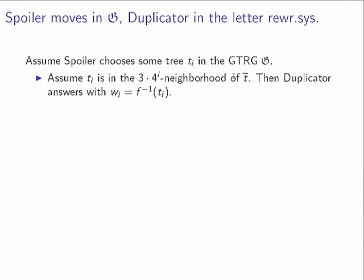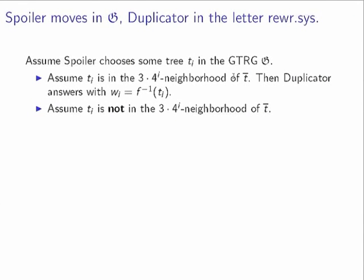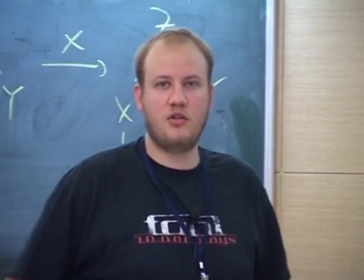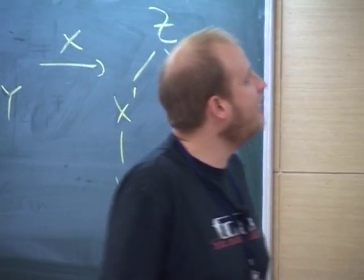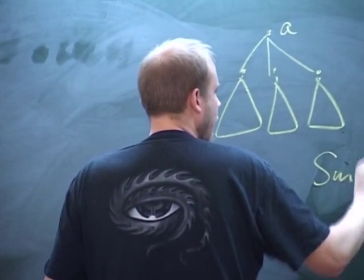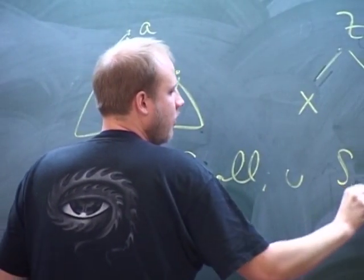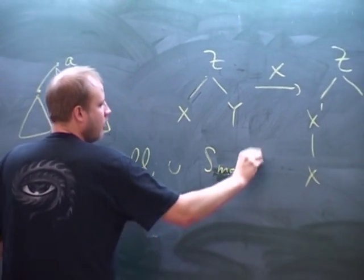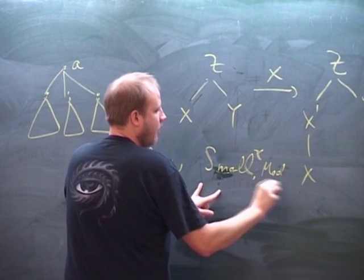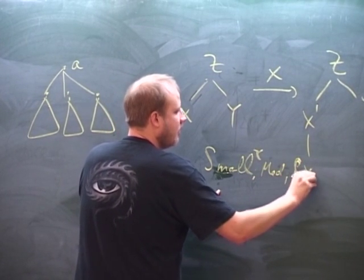Now the question is what happens if spoiler chooses a tree far away from all previously chosen trees — not within the 3×4^i neighborhood. We make a case distinction: is this tree small or big? If the chosen tree is small, then duplicator responds with a small tree — a one-letter word. The response must be either a small tree or a sequence of small trees with one medium tree and then small trees again.